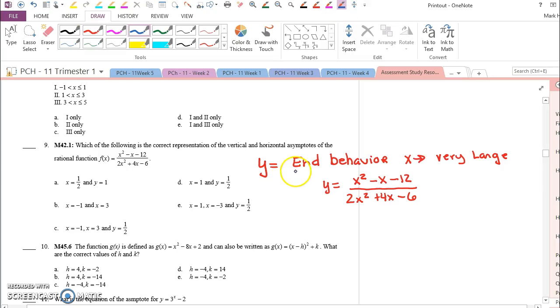So if we're looking for a horizontal asymptote, that's going to be my end behavior when x is very, very large. So that means nothing matters but the leading term.